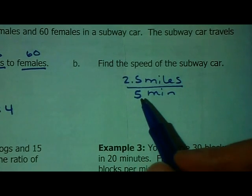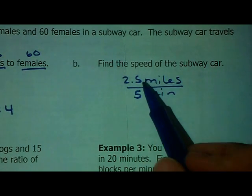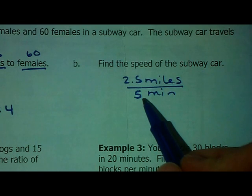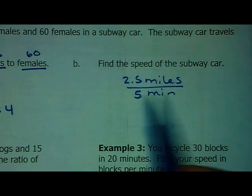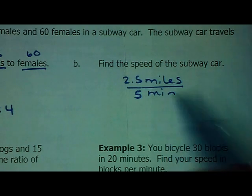The simplest way to find a unit rate is just to divide the top by the bottom. We want this to be out of 1. And, if you take 5 divided by 5, you'd get 1. Whatever you do to the bottom, you'd have to do to the top.